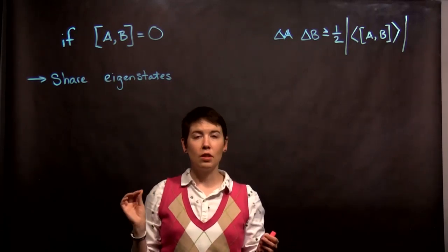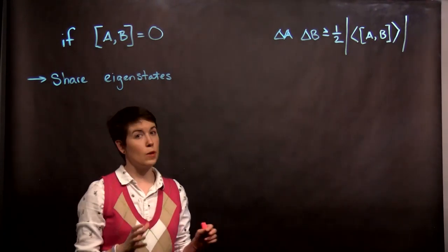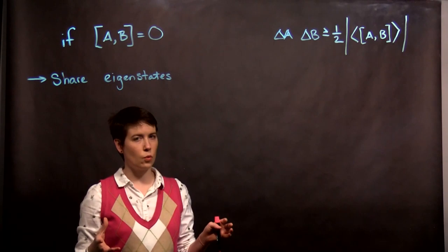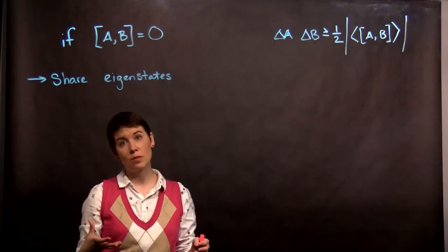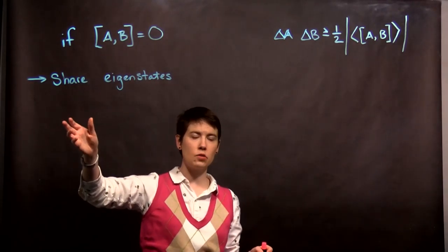This is really just multiplying some matrices together. So if the commutation between two matrices is zero, that is a very special case. And we haven't actually met anything yet for which this is going to be true, but there are going to be some specific operators where this is true. This means that they share eigenstates.